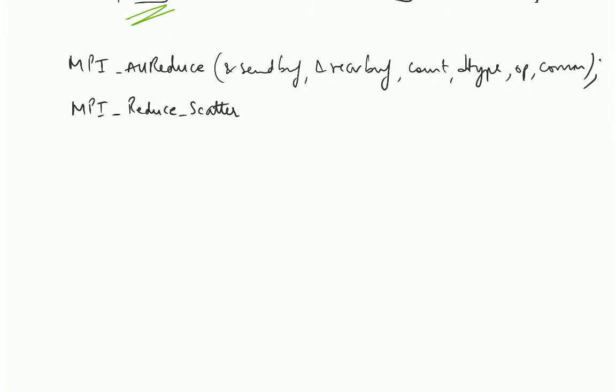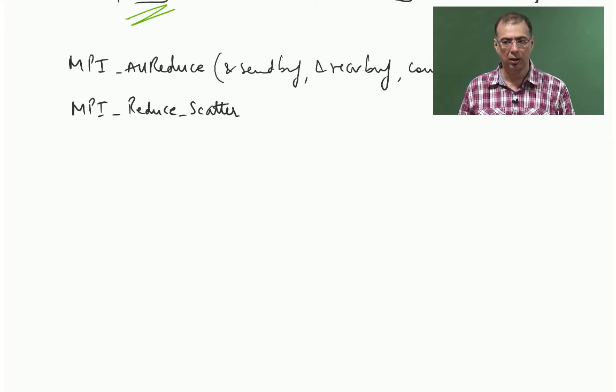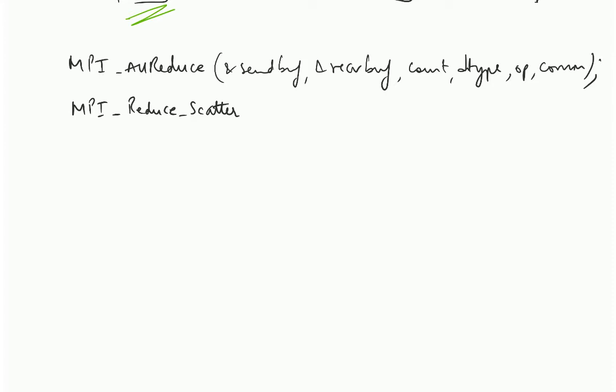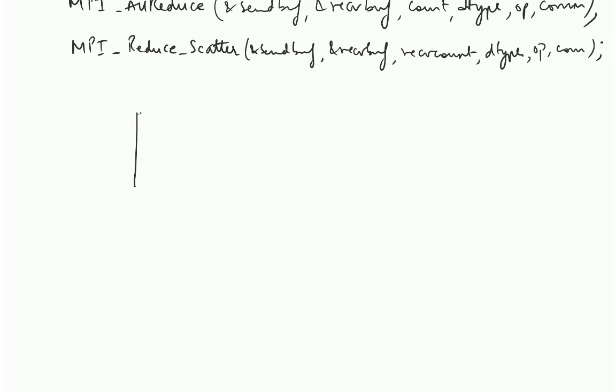So there is a call called MPI reduce scatter. We talked about reduce, we spoke about all reduce. Reduce, the results were available on a single processor. All reduce, the results were available on all the processors. What is reduce scatter? MPI reduce scatter is the combination of MPI reduce and MPI scatter. Let us understand what it does. What are the arguments? Send buff, receive buff, receive count, data type, operation, communicator.